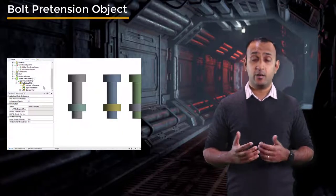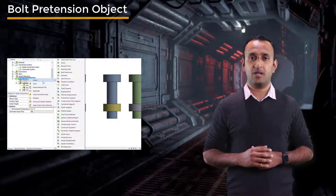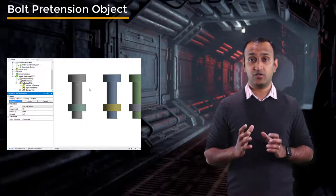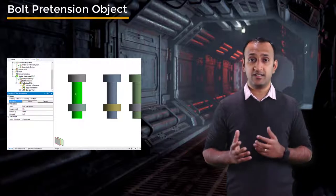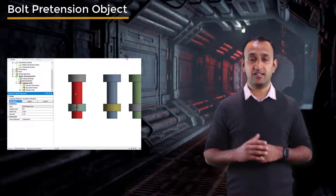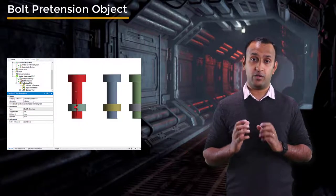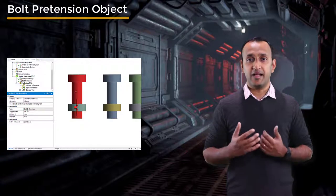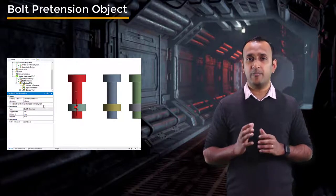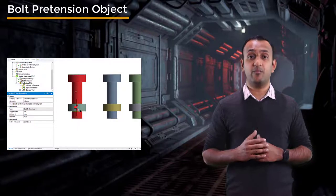Let's discuss the two methods of defining bolt preload in detail, starting with the first method: using the bolt pretension object. This is the most common way of defining bolt preload since it requires very little pre-processing. The bolt pretension object can be scoped to solid bodies, line bodies, and even beam connections. In case of solid bodies, it can be scoped to either a cylindrical surface or to the solid body itself, which is useful for non-standard bolts without a cylindrical surface. ANSYS Mechanical uses a coordinate system to define the cutting plane and the axis of the bolt. It's important to keep in mind that this cutting plane must not pass through a region where bonded contact is defined.